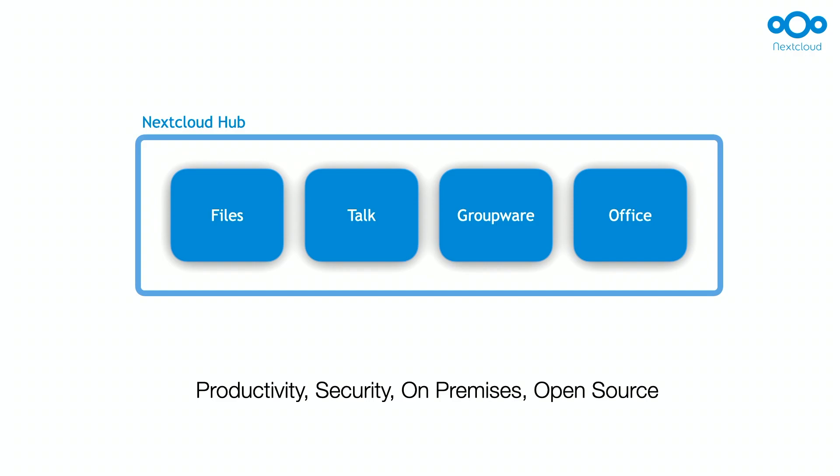Our product is NextCloud Hub, structured into four pieces. We have NextCloud Files for file sync and share, then Talk for chat and video conferencing — like an open source Teams — Groupware for mail, calendar, and contacts, and Office for document editing. You might wonder: Slack has it, Dropbox has it, Microsoft has it, Google has it — what's the difference? Well, the difference is that this is all open source and we as NextCloud host nothing.